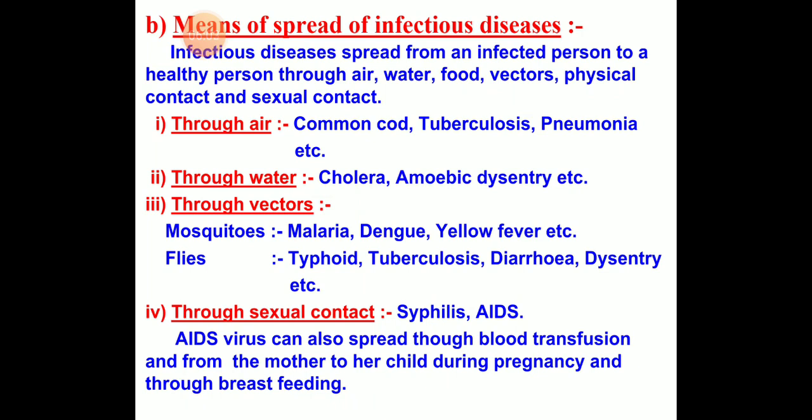Means of spread of infectious disease: Infectious diseases spread from an infected person to a healthy person by air, water, food, vector, physical contact, and sexual contact. Through air: common cold, tuberculosis, pneumonia, etc. By water: cholera and amoebic dysentery. By vector: mosquitoes carry the pathogens of malaria, dengue, and yellow fever from one person to another. Flies carry infectious agents like typhoid, tuberculosis, diarrhea, and dysentery from infected to healthy persons.